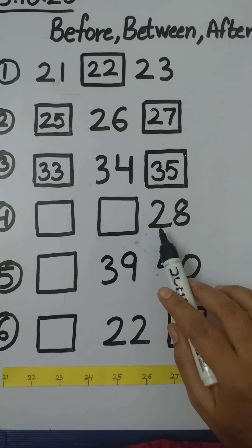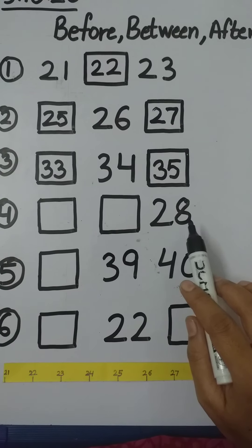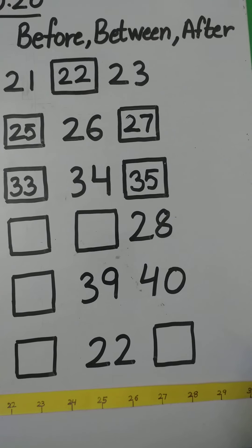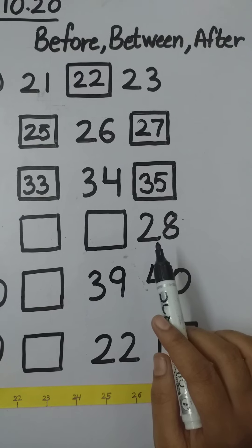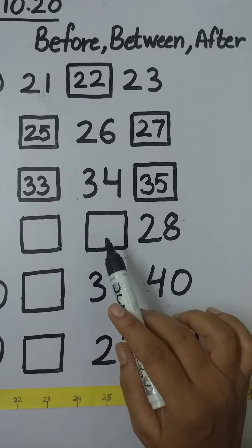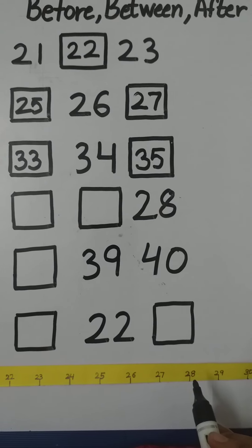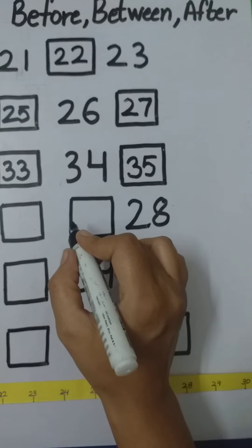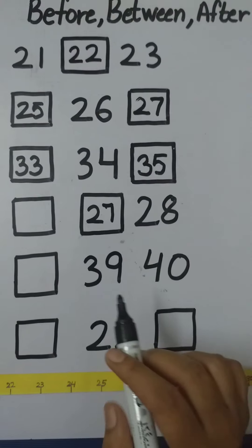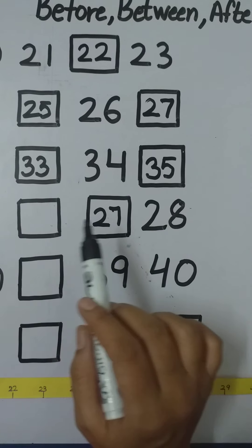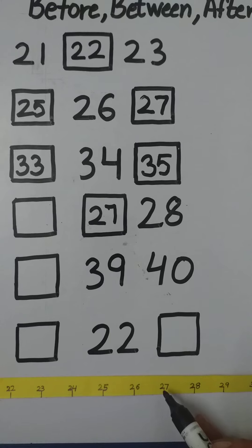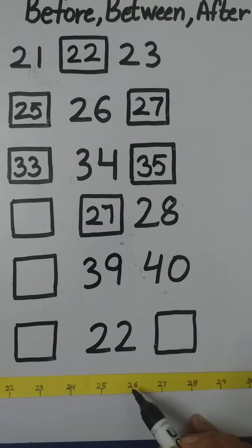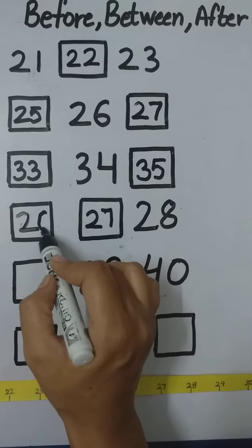So children, next is number 28. There are two numbers missing from here. Now tell me children, what comes before number 28? Let's find out — 27. So we have to write here 27. Now tell me what comes before 27? Let's find out. What comes before 27? 26. So we have to write here 26.